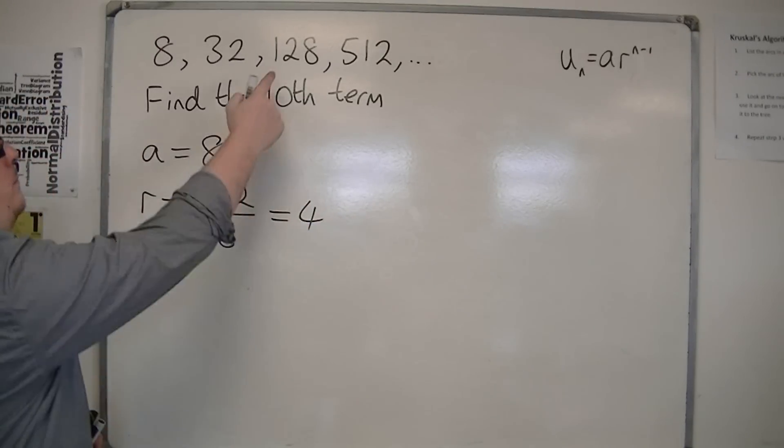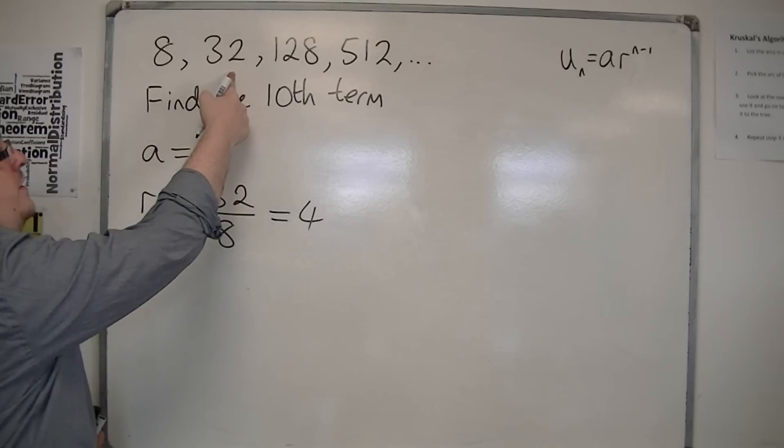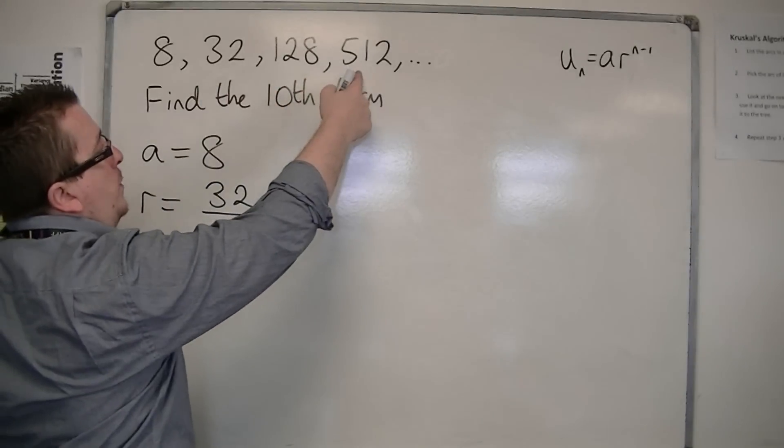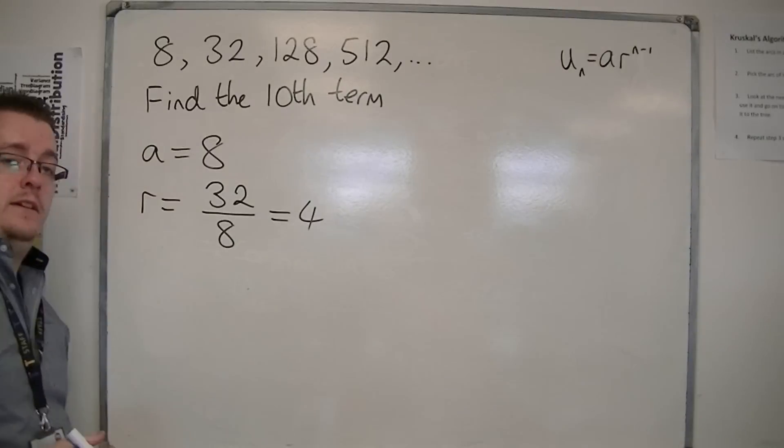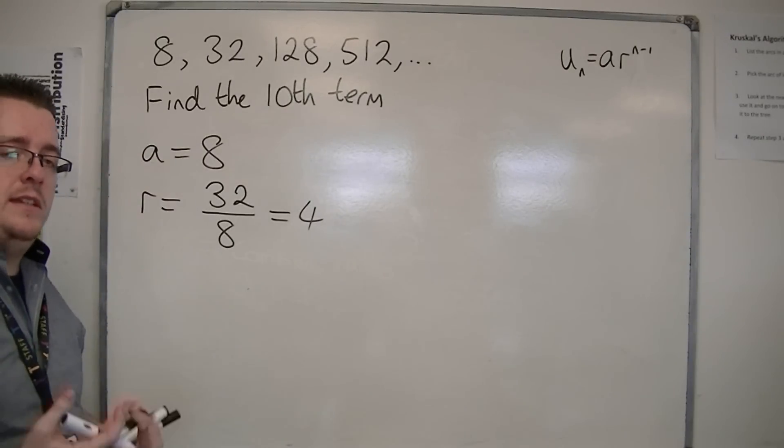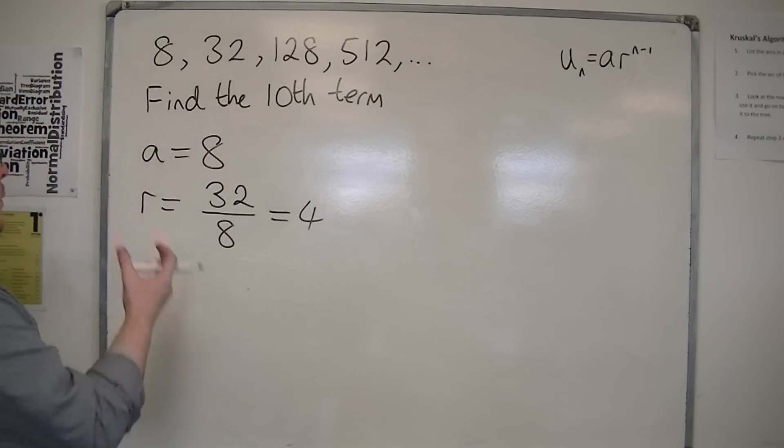I could have done that by doing 128 divided by 32, or 512 divided by 128. It doesn't matter, as long as I'm using two consecutive terms. So, r is 32 divided by 8, which is 4.